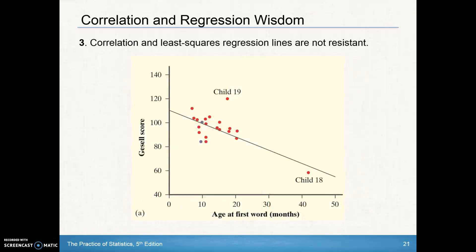Third thing about the wisdom of correlation regression. Correlation and least-squares regression lines, your r values and your least-squares regression lines, your y-hat equals your a plus bx, they are not resistant to outliers. Outliers can change both your r value and your equation.